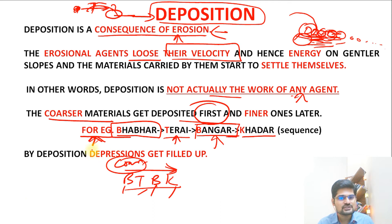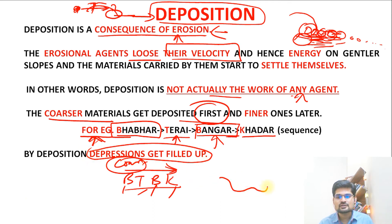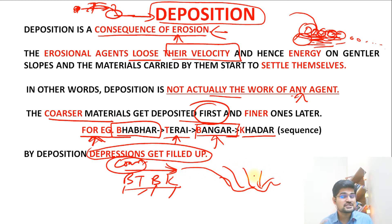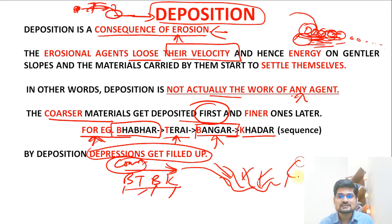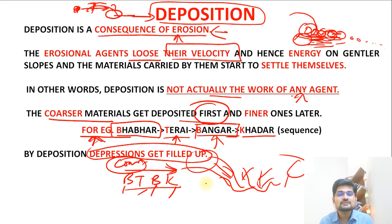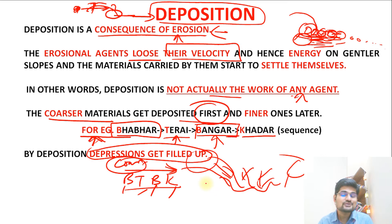By deposition, depressions on Earth's surface get filled. Sediments come and fill these depressions, as seen in the geosynclinal theory where geosynclines receive sediments from surrounding cratons. The deposition process has been filling depressions on Earth's surface throughout geological history.